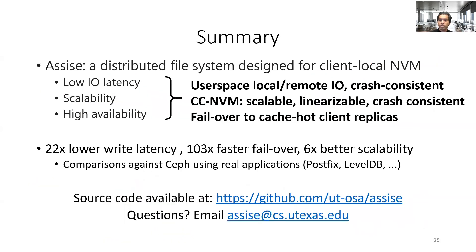To conclude, ASIS is a distributed file system that uses client-local NVM to simultaneously provide low latency, scalability, and high availability. ASIS performs local and remote IO from user space and uses CCNVM, a novel distributed coherence protocol, to provide scalability, linearizability, and crash consistency. Finally, ASIS fails over faster to cache-hot client replicas to provide high availability. ASIS provides orders of magnitude lower write latency, faster failover, and better scalability than the state of the art, tested on real cloud applications such as Postfix and LevelDB.